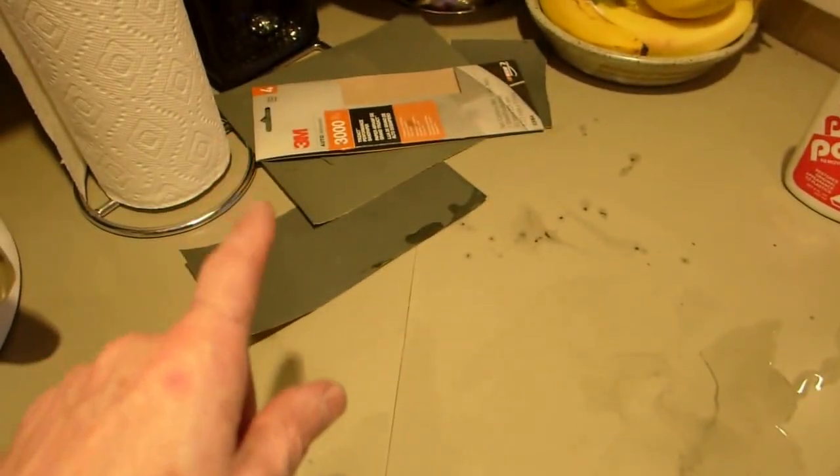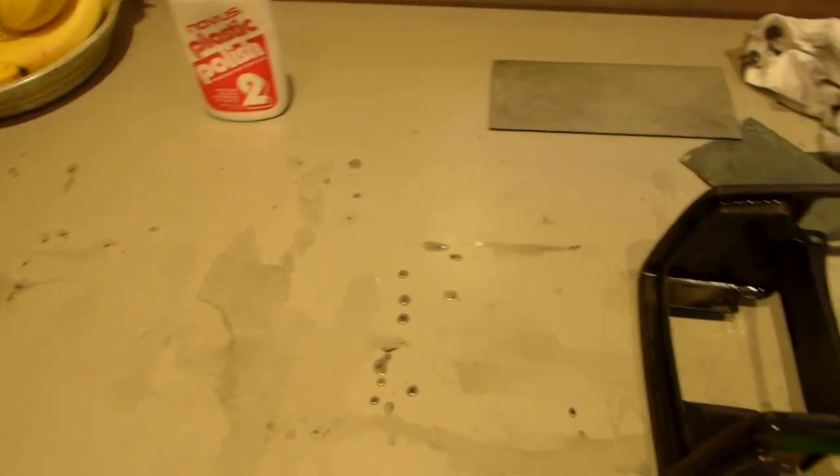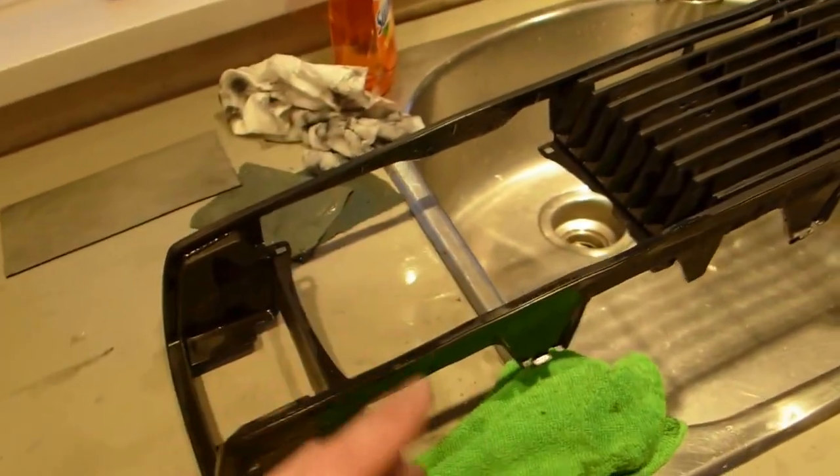So I went 1000 grit, 2000 grit, 3000 grit wet sandpaper, and then I'm going to hit it with the Novus plastic polish and just sort of bring the surfaces up.